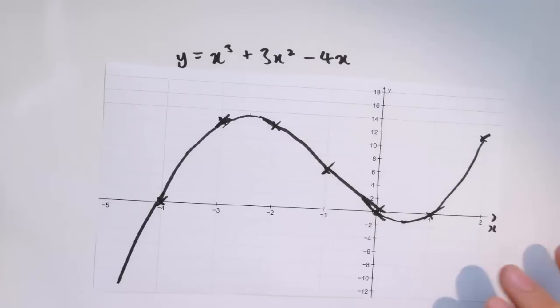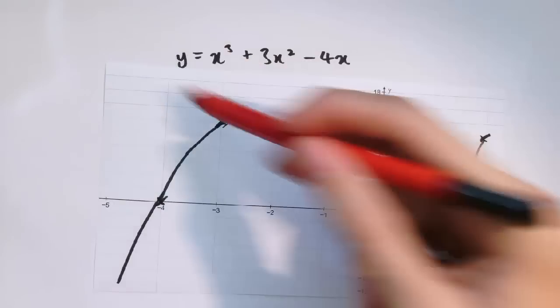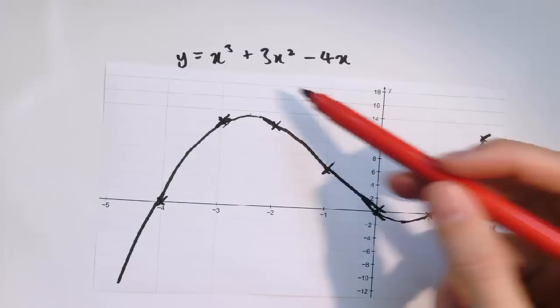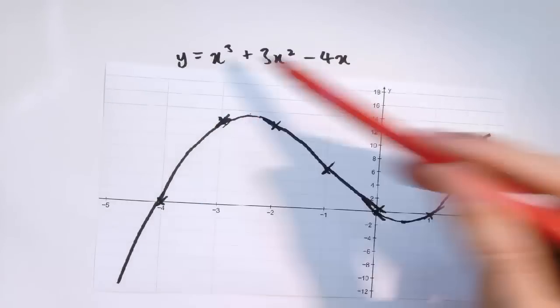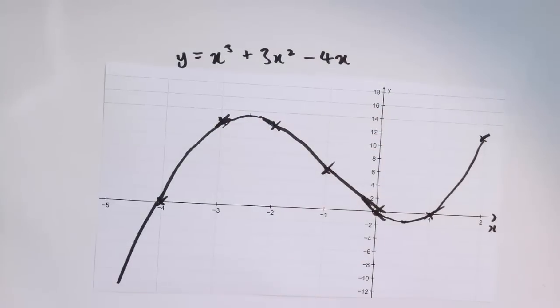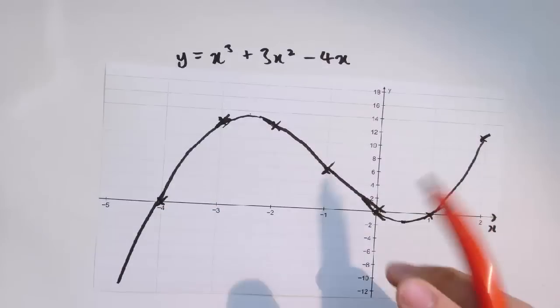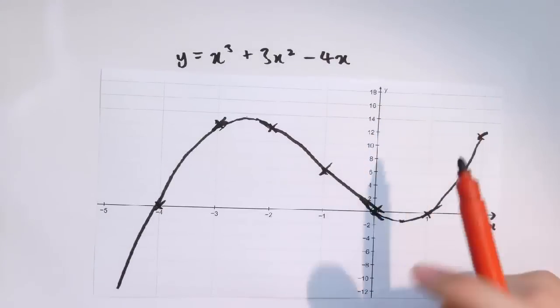Sometimes we just draw the graphs because we know what they look like from previous examples, or we can just try out some values. But if we've got something a bit complicated like this, where it takes quite a lot of effort to find values and we've got it in this nice form, y equals a function of x, it can be much quicker to just draw a table of values, plot lots of different x values, and see what we come up with.